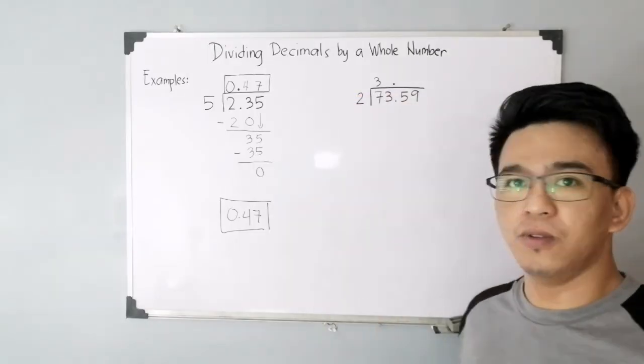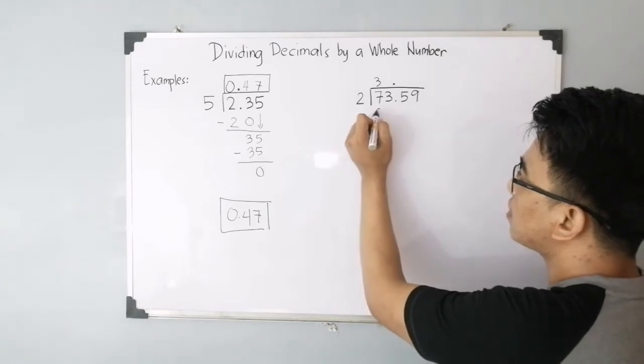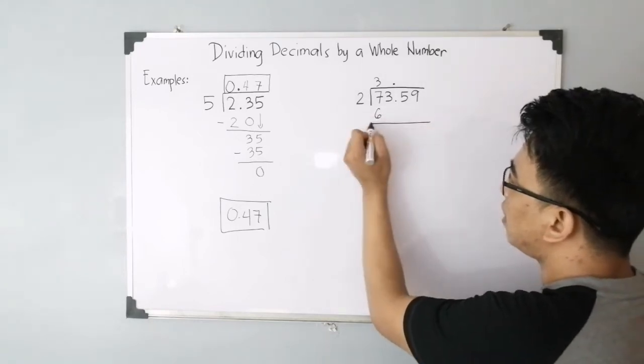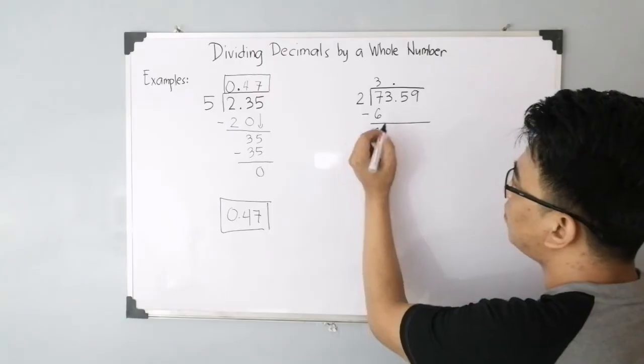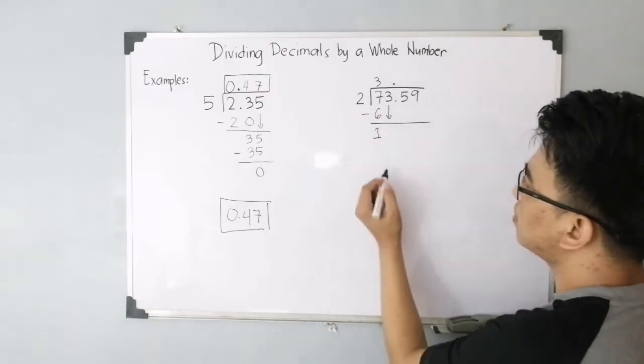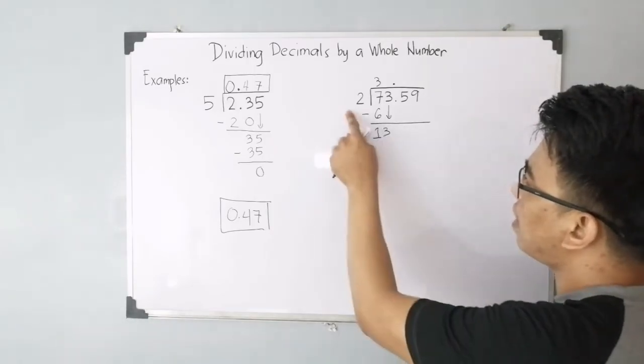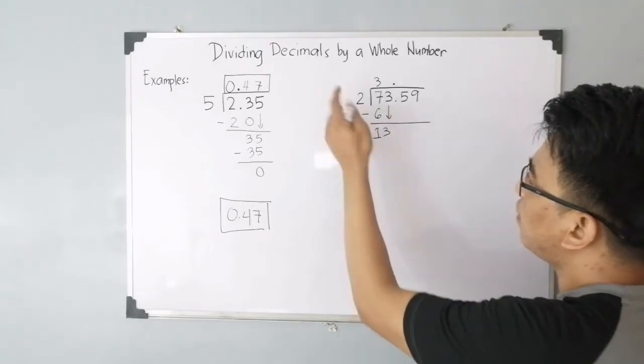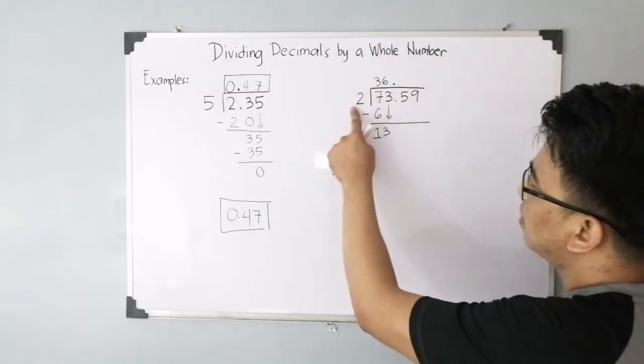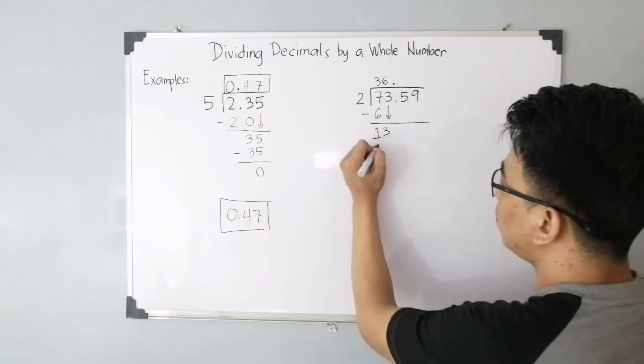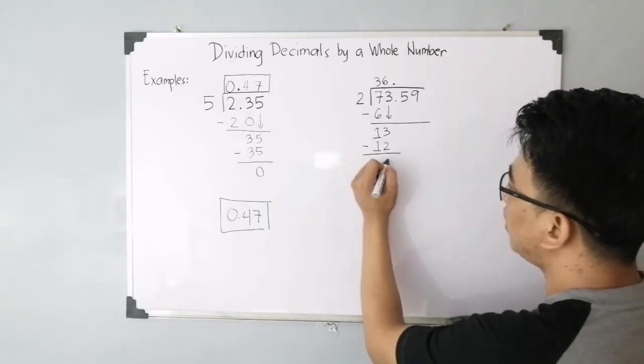We have 3 times 2, that will give you 6. Then subtract the numbers: you have 7 minus 6, that is 1. And then bring down 3. So this is your new dividend, which is 13. 13 divided by 2, that will give you 6, and 6 times 2, that is 12. Subtract 13 by 12, that is 1.